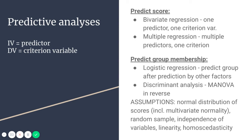For example, if you're looking at whether self-esteem predicts a GPA score, you could get someone's self-esteem score on a valid measure, and if you had a significant regression equation, you could fairly accurately predict that person's GPA. In multiple regression, you just have multiple predictors and one criterion variable.